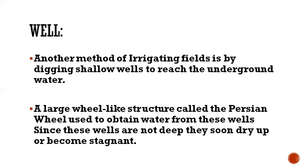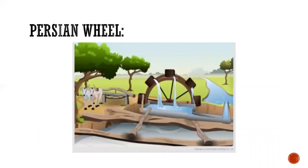Another method of irrigating fields is by digging shallow wells to reach underground water. Then there is the Persian wheel — a large wheel-like structure used to obtain water from these wells. Since these wells are not deep, they soon dry up or become stagnant. You can see the Persian wheel structure here.